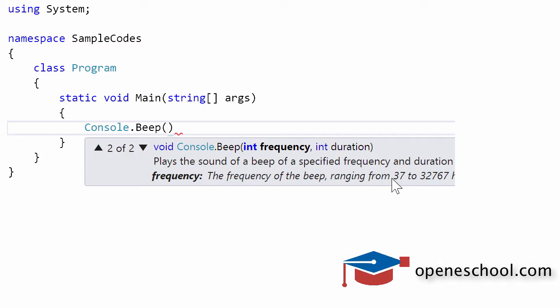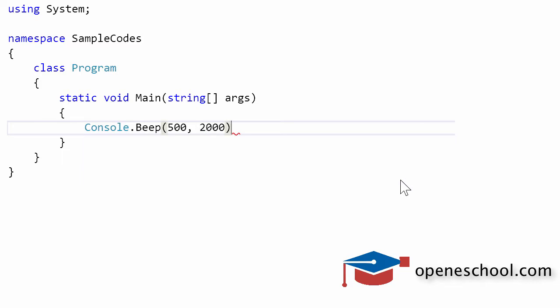Let's say I set the frequency as 500, and then it will ask me to set the duration for which I want to generate this beep. The duration will be set in milliseconds. If you want to generate that beep sound for two seconds, you will have to give the value as 2000. So 2000 milliseconds will make it two seconds.